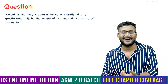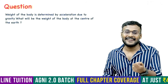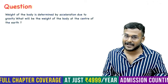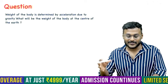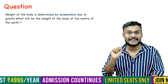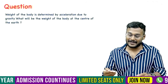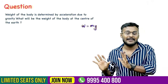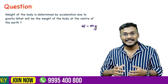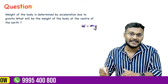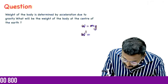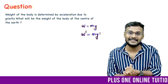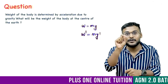At the center of the body, one of the most important things: the weight of the body is determined by acceleration due to gravity. What will be the weight of the body at the center of the Earth? W is equal to Mg — weight equals mass times acceleration due to gravity. At the Earth's surface we have Mg; at the Earth's center the weight is zero.